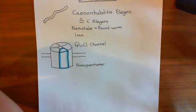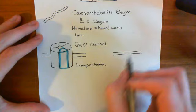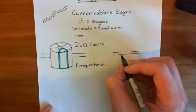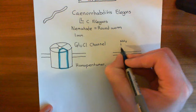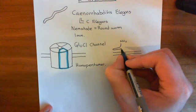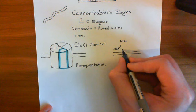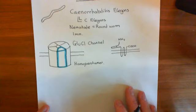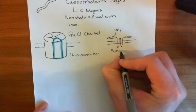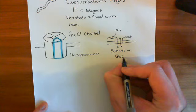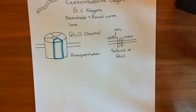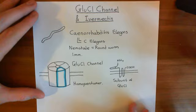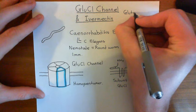Looking at a single GluCL subunit within the phospholipid bilayer, the structure follows the classic cis-loop ligand-gated ion channel layout. There is an amino terminus, then the cis-loop, and then the transmembrane region consisting of M1, M2, M3, and M4, followed by the carboxyl terminus. GluCL stands for the glutamate-gated chloride channel — it is a chloride channel gated by glutamate.